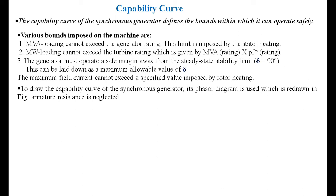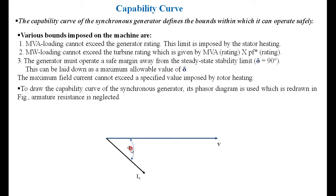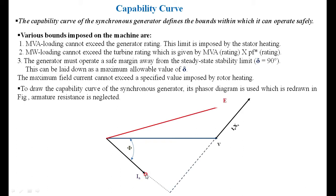From the vector diagram of the alternator, we obtain the capability curve. Here, V is the terminal voltage. The current Ia is lagging at an angle phi — that is, the power factor angle is phi. Neglecting armature resistance, I am adding the Ia·Xs drop to V, so that I get the generated voltage E. The Ia·Xs drop is perpendicular to Ia. The angle between the terminal voltage V and the generated voltage E is called the load angle or torque angle delta.